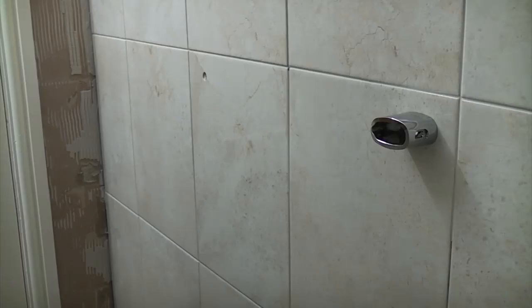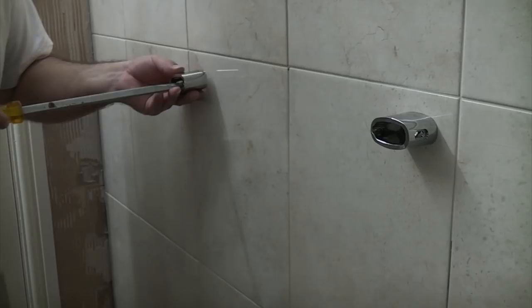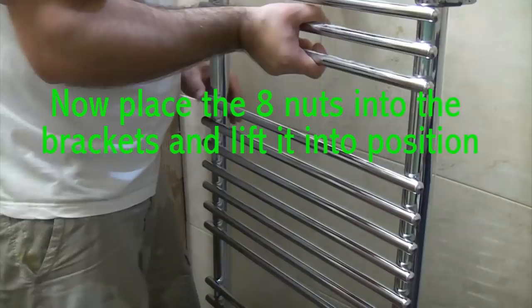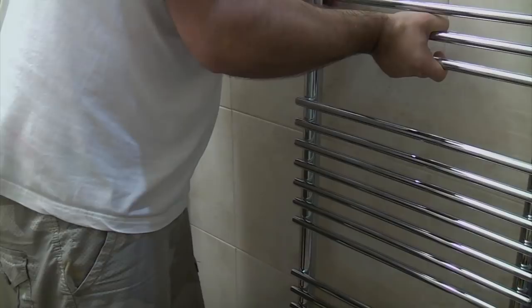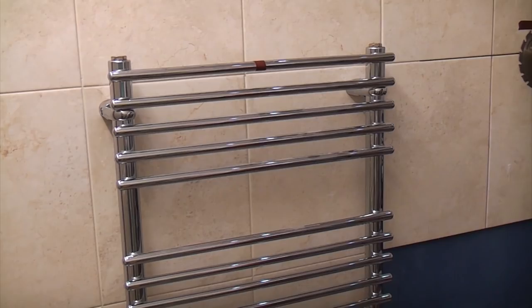So I can now lift the tile radiator up and make sure that each bracket locates inside the locating parts of the bracket. And then once you have pushed it in you can then fix it in position using the provided screws and they are now going from the side.